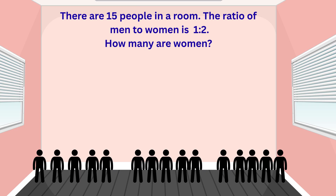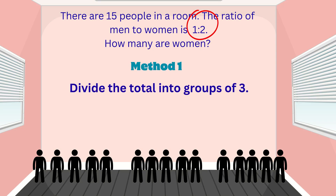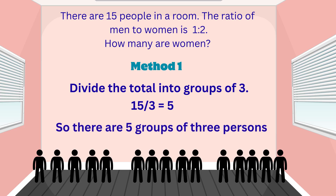What if the ratio is given and you want to find the actual quantities? For example, there are 15 people in a room. The ratio of men to women is one to two. How many are women? There are a few ways to figure this out. We know the sum of the parts of the ratio is three. So one method is to divide the total number of persons into groups of three. We divide the total number of people by three to find out how many groups of three are in the room.